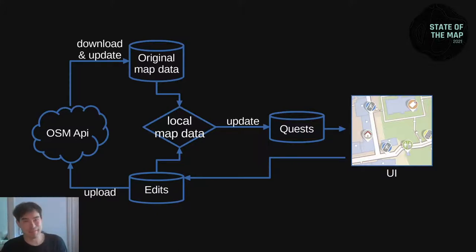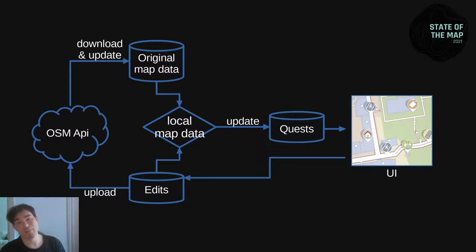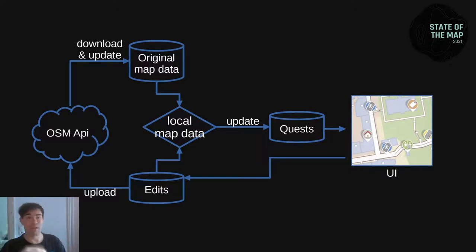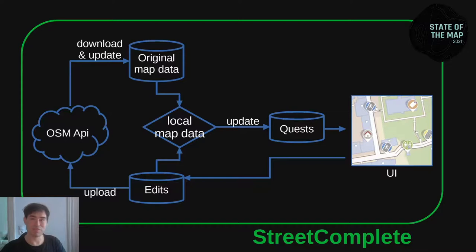Maybe we can do it a little easier like this. It's basically the same, but the map data object is not changed from within the app — it's only ever updated from the OpenStreetMap API, either on download or after an upload. The local map data object is updated every time the original map data or the edits update. So it's more or less a cache: the original map data with the edits applied on top. And this is how StreetComplete does it now.